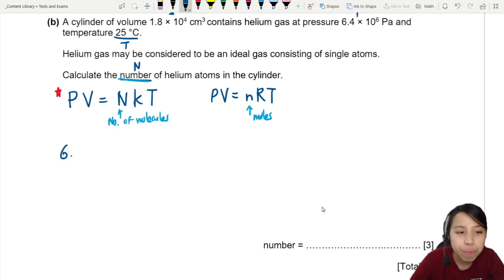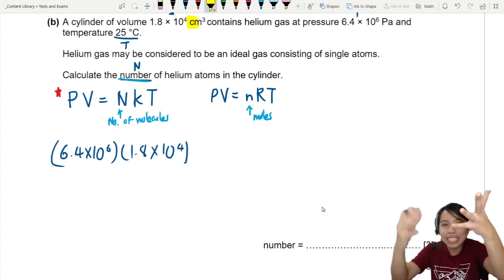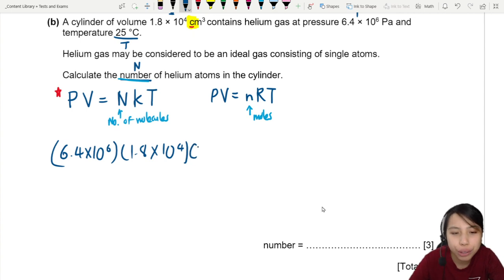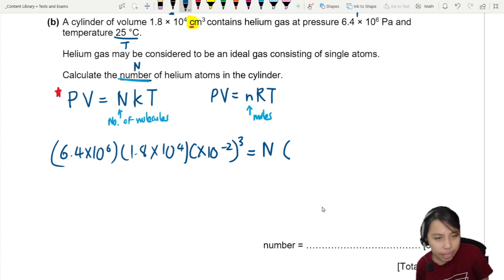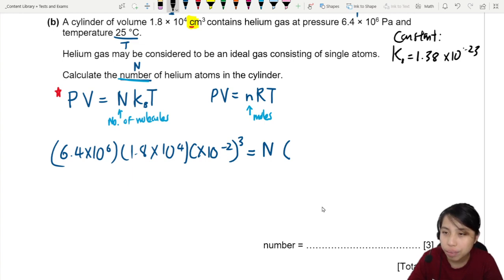Okay, let's plug in all the values we know. So, pressure? 6.4 times 10 to the 6. Volume? 1.8 times 10 to the 4. Oh, there's a trap! Look! Centimeter cube. Centi. Must convert the centi. A lot of people forgot to convert this. Okay, so 10 negative 2, cube. Please remember. Number, we need to find that. K is a Boltzmann constant. It's in the data formula sheet in the first page of every question booklet. Boltzmann constant. This one is 1.38 times 10 to the negative 23. So, we can write that. Write it down or memorize it. Okay, so 1.38 times 10 to the negative 23. Temperature?